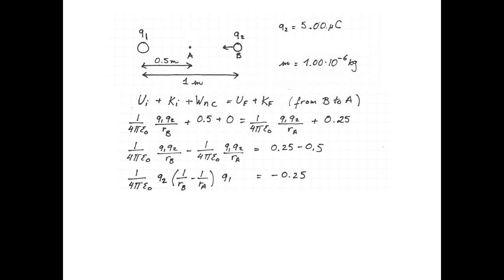Our only unknown is q1, and the whole thing should equal negative 0.25. So we plug all the numbers in and find -45,000 q1 equals -0.25. So q1 is 5.56×10⁻⁶ coulombs, or 5.56 microcoulombs.